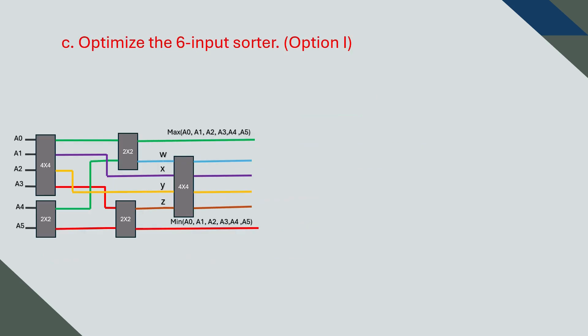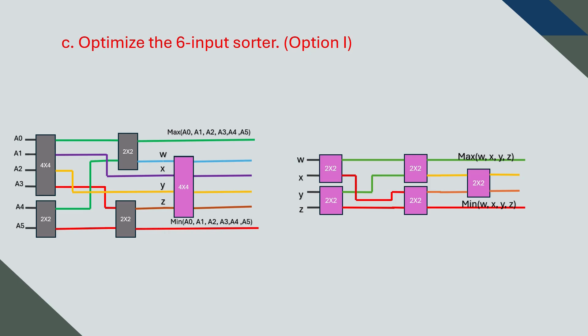In this final section, we are asked to optimize the system. In other words, reduce the number of sorting components used. Let's take a closer look at the four-on-four sorter. We will now break it back down into its basic two-on-two components to look for optimization opportunities.